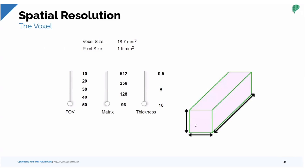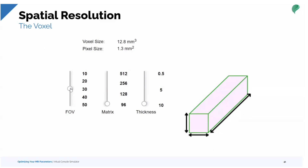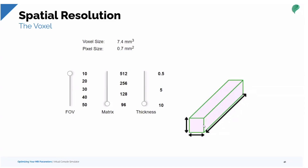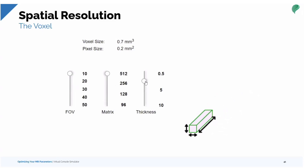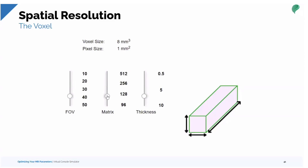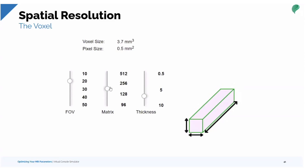A voxel is a three-dimensional cube. As field of view decreases, so does pixel size — the face of the pixel — measurable in millimeters. This is our geometry. The slice thickness controls the depth of the voxel. As the matrix increases, pixel and voxel sizes get smaller both mathematically and visually. Large voxels give us lots of signal but very low resolution. Small voxels give us very high resolution but lower signal-to-noise, so we have to compensate in certain ways.